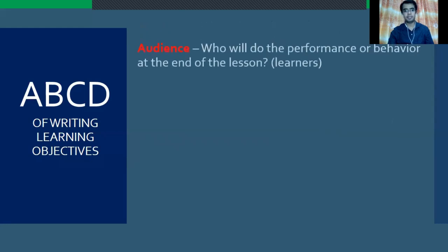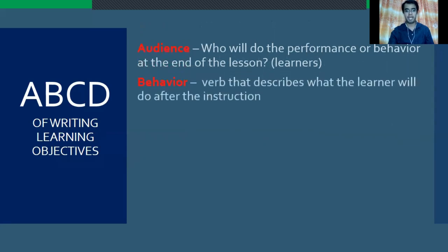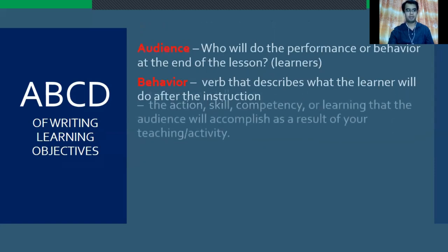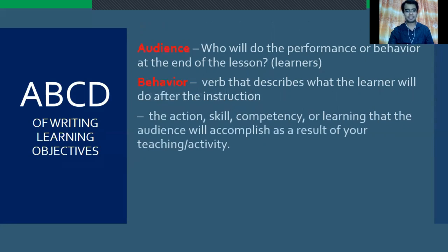Letter A is the audience — who will do the performance or behavior at the end of the lesson? Usually, it refers to the learners, students, or pupils. Letter B is for behavior — it is the verb that describes what the learner will do after the instruction, or it is the action, skill, competency, or learning that the audience will accomplish as a result of your teaching or activity.